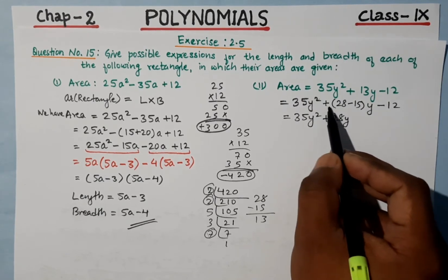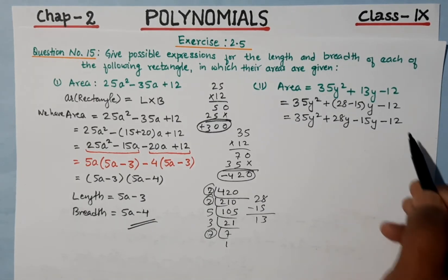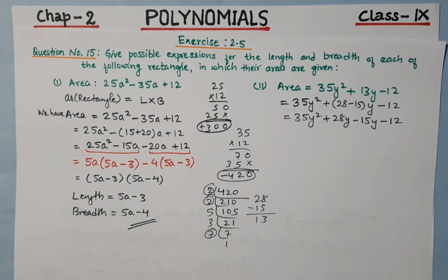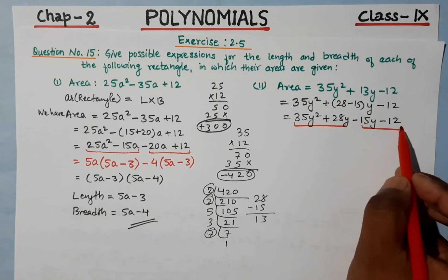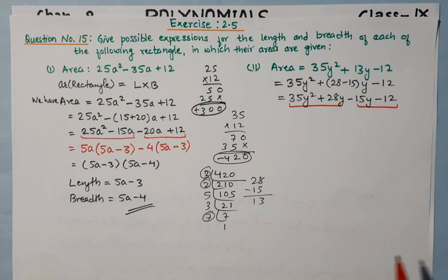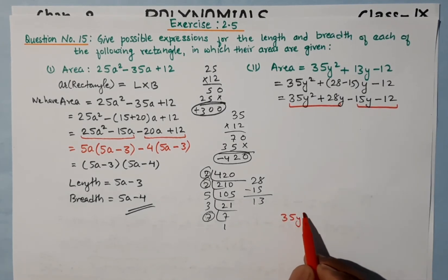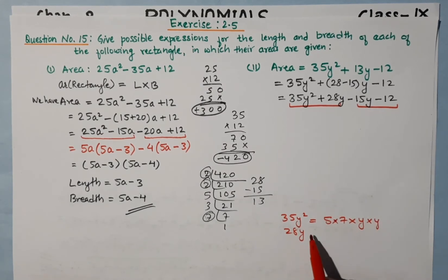So we open the bracket: 35y² + 28y - 15y - 12. Our next step is to take common factors. Looking at the terms, 35y² can be factored.